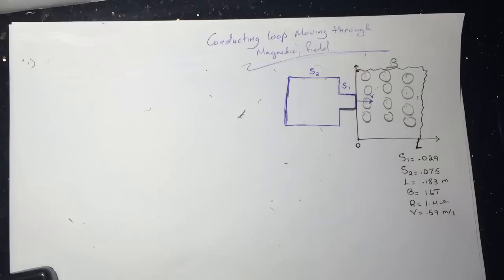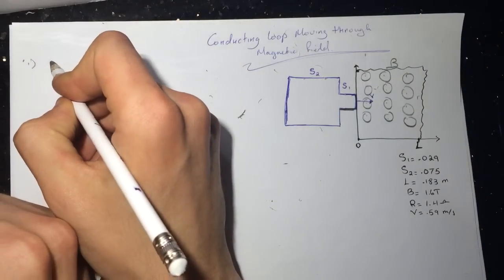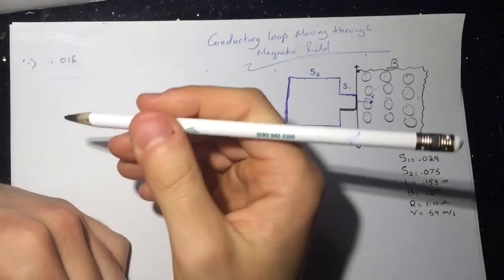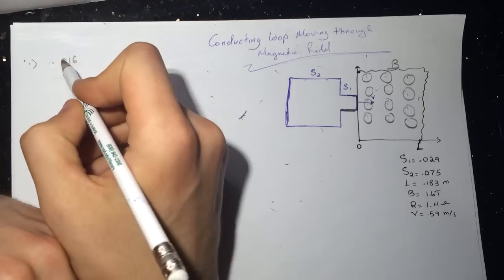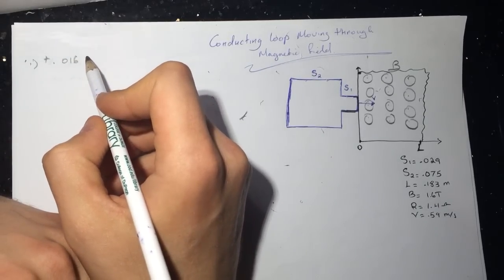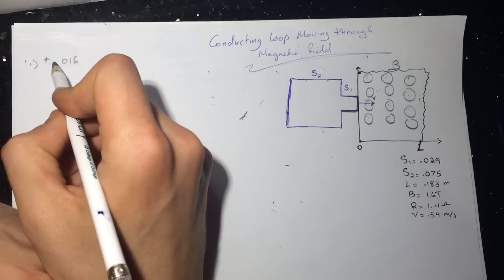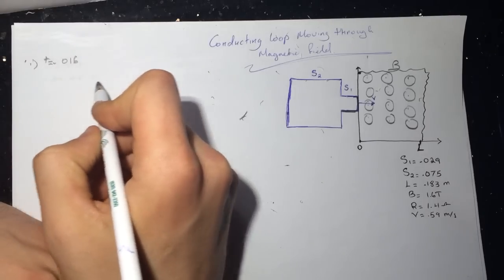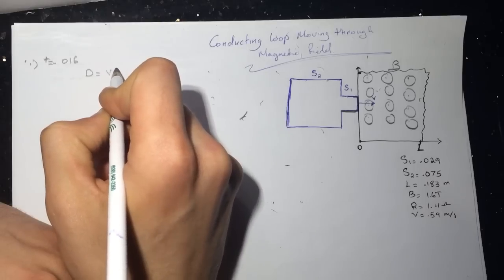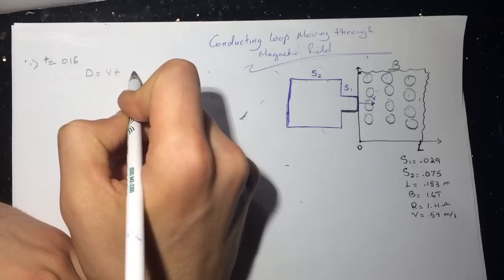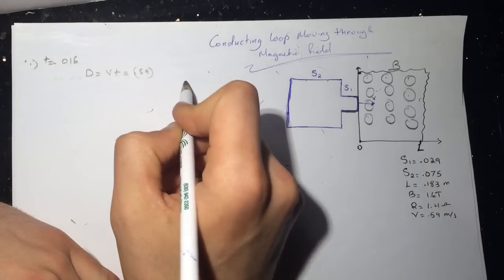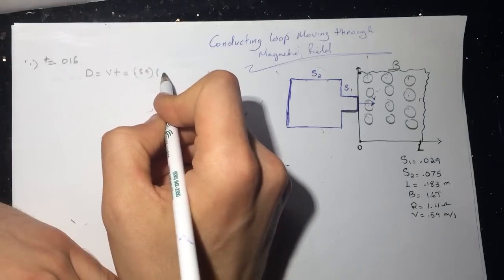So the first question is asking, at time equal 0.016, by the way you can read the question down in the description. At time equal 0.016, what is the induced current in the loop? Let's see what's the distance here. The distance will be V times T, and V we have it, which is 0.59 times the time, which is 0.016.